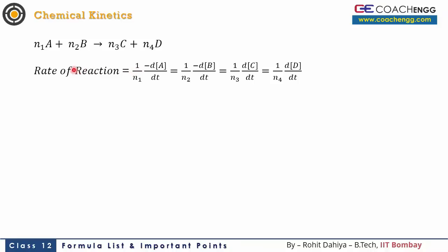Using basic unitary method: (1/N1)(−dA/dt) = (1/N2)(−dB/dt) = (1/N3)(+dC/dt) = (1/N4)(+dD/dt). Since C and D are being produced, the terms dC/dt and dD/dt are already positive.